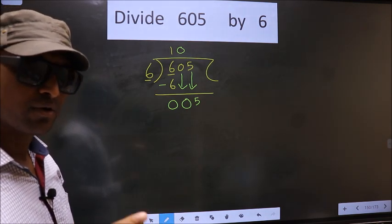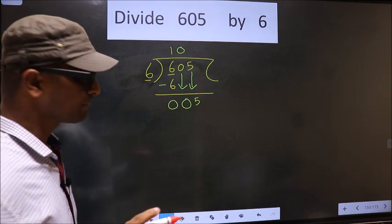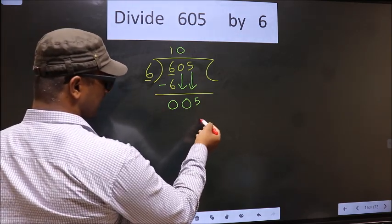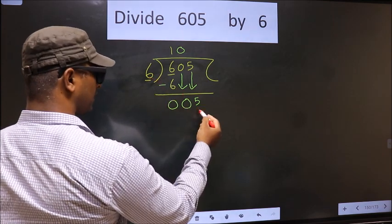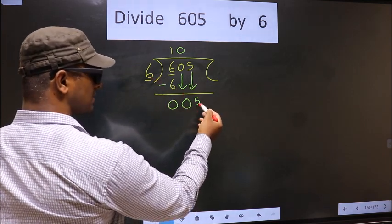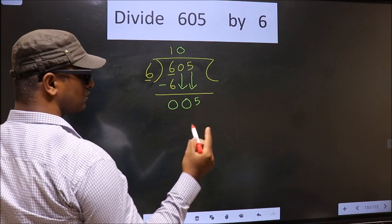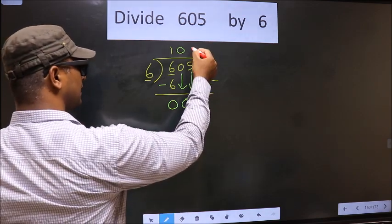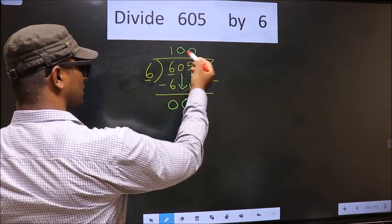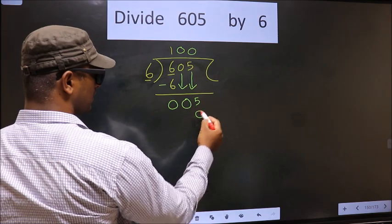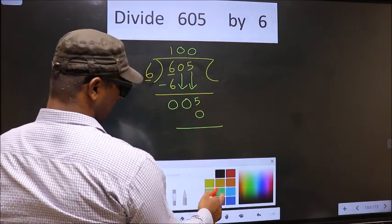Instead, instead, what you should think of is: what number should we write here? If we write 6 here, that is larger than 5, so what we do is we take 0 here. So 6 into 0 equals 0. Now you subtract 5 minus 0 equals 5.